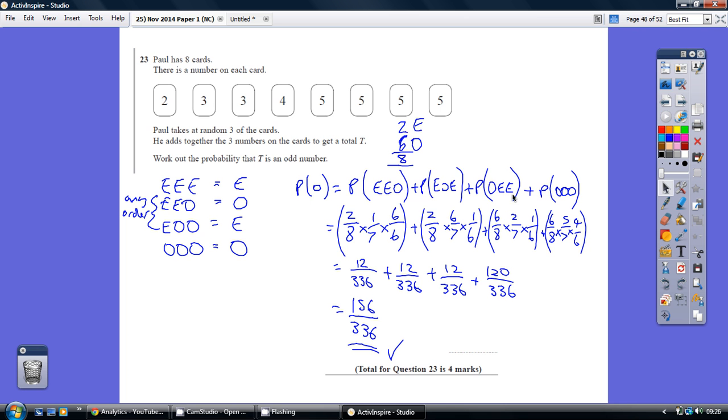This combination, odd, even, even: six out of eight, then two out of seven, then one out of six. And how could we get an odd, odd, odd? That would be six out of eight, five out of seven, four out of six.